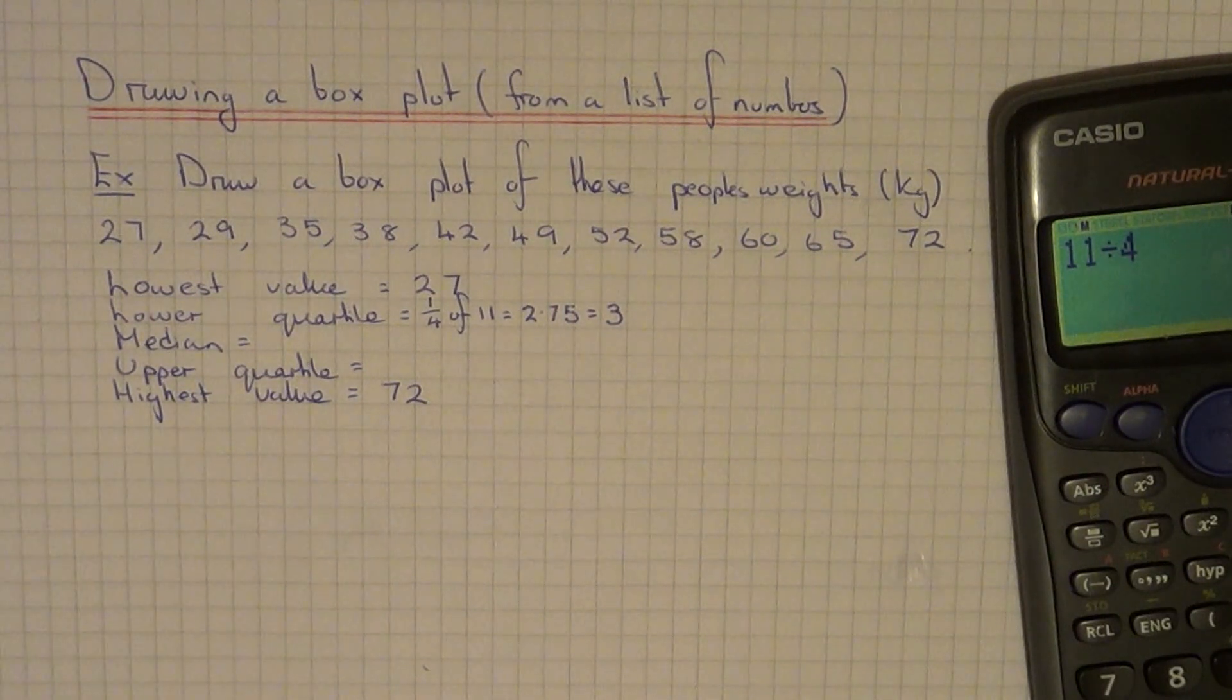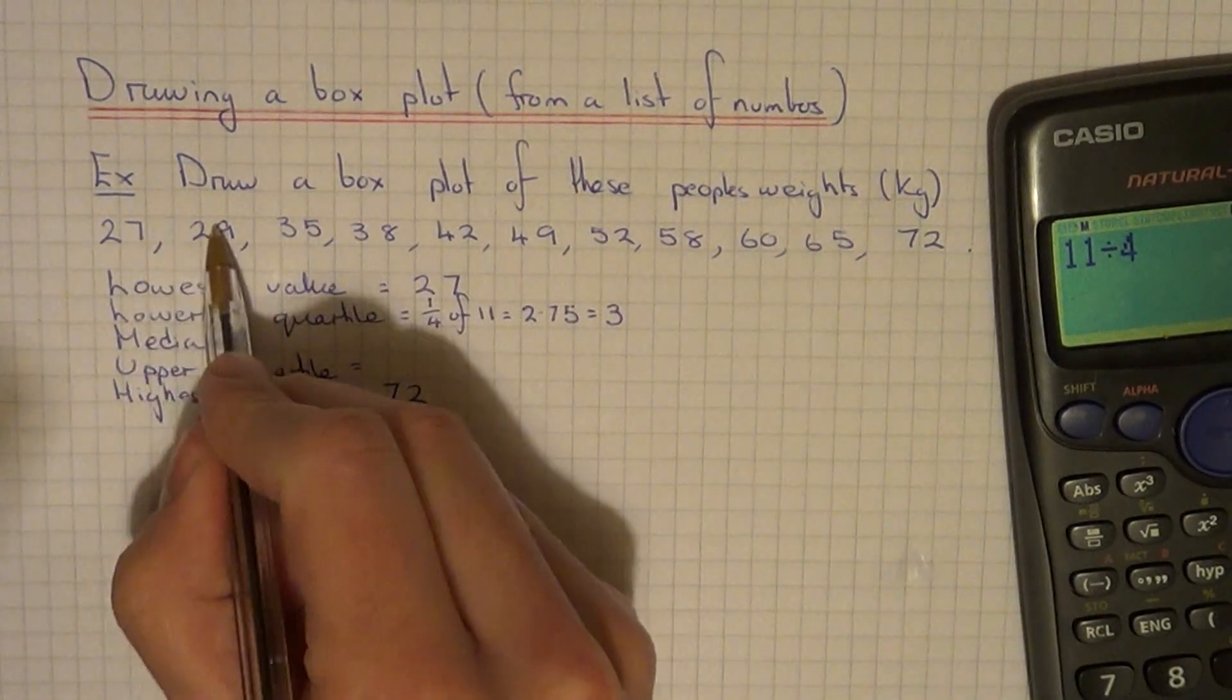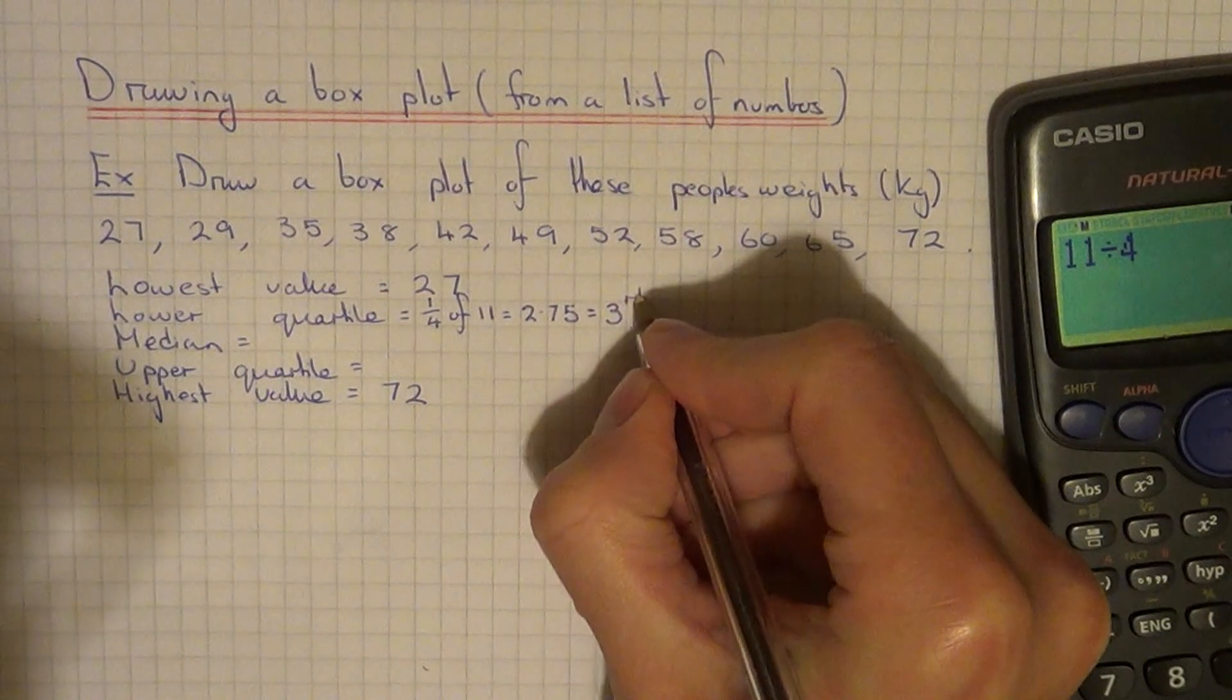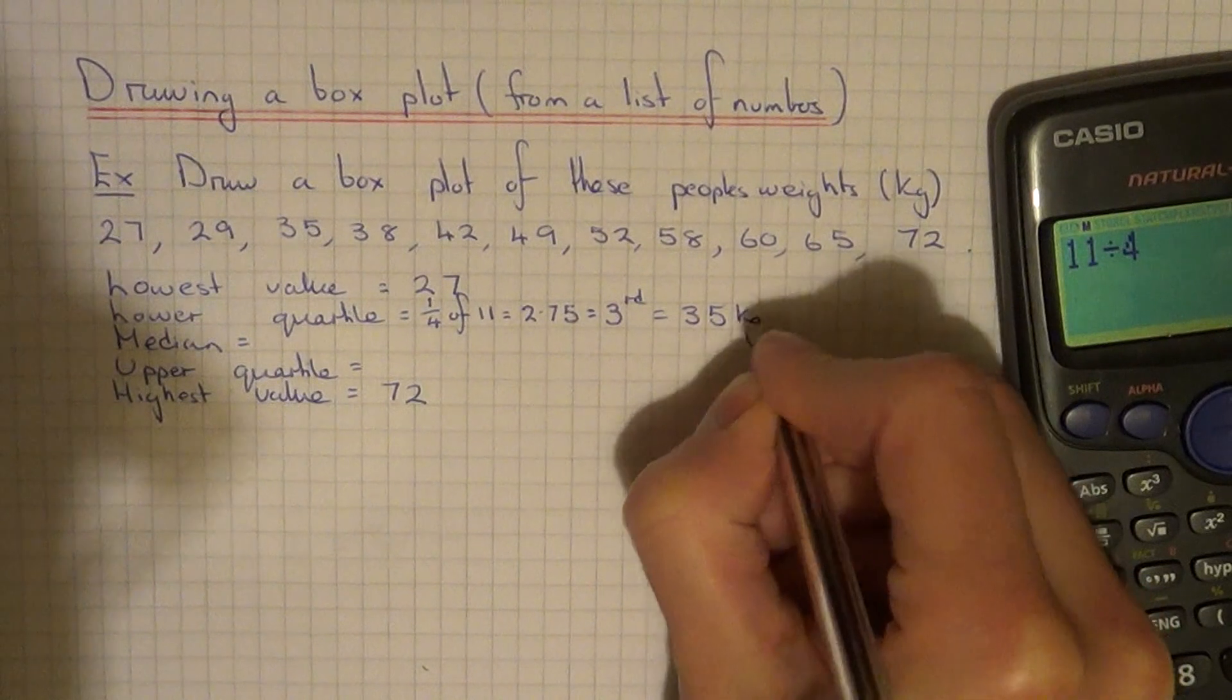However, if it came out as a whole number such as 5, that would mean the lower quartile would be between the fifth and sixth values. Let's count 3 in on our list: 1, 2, 3. So our lower quartile is at 35 kilograms.